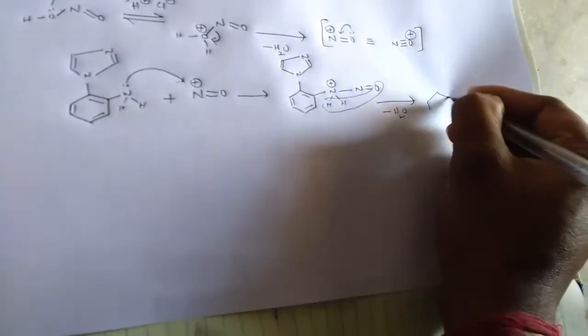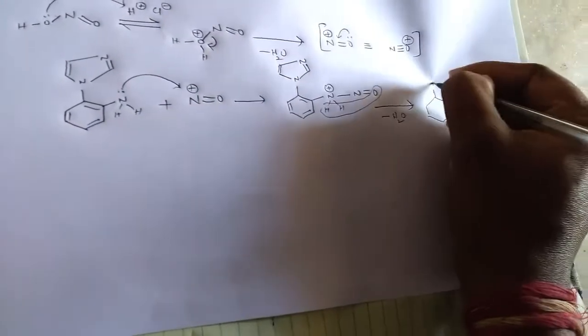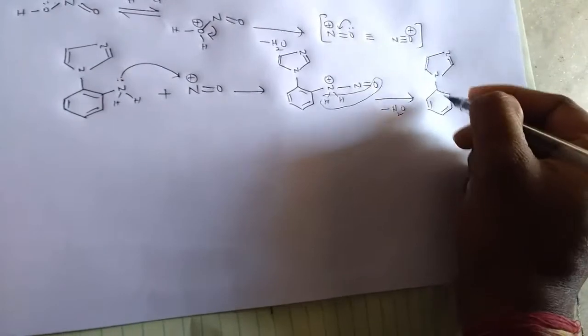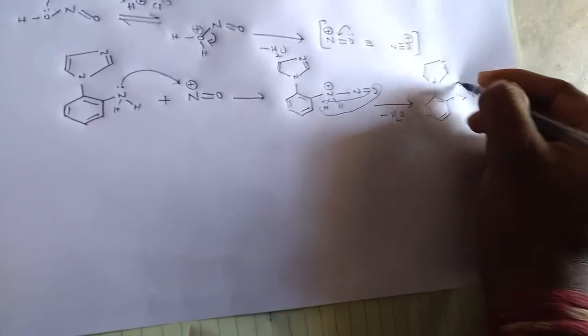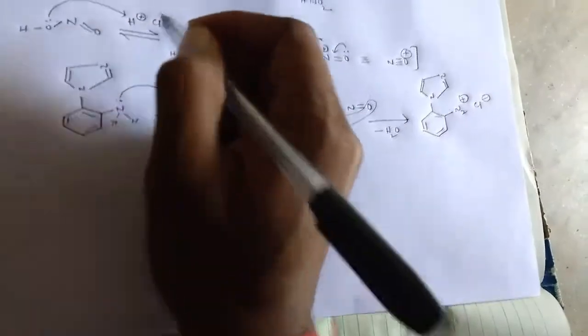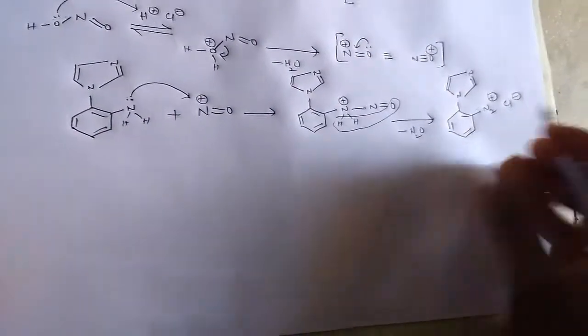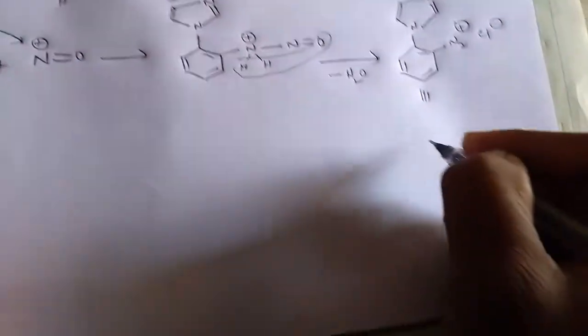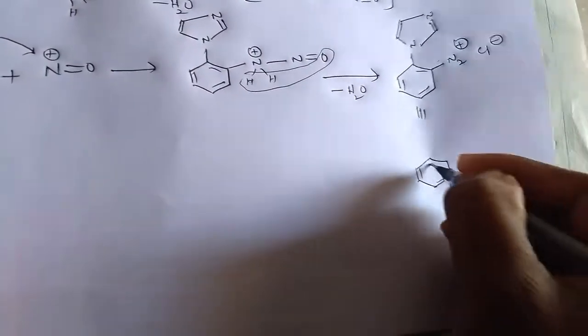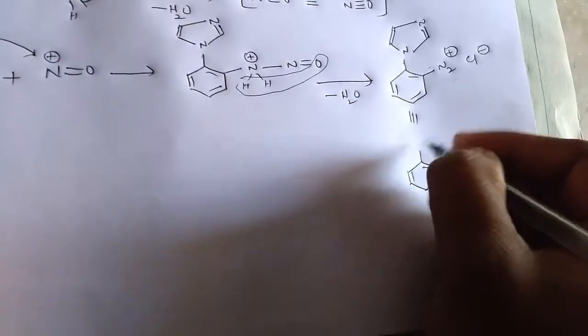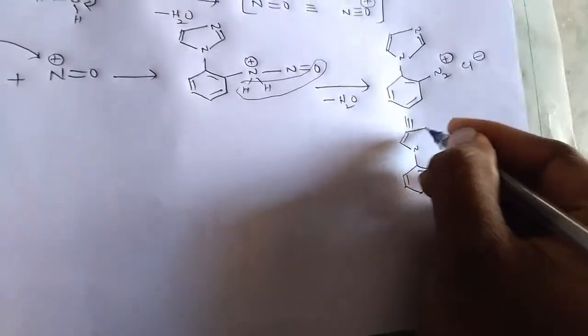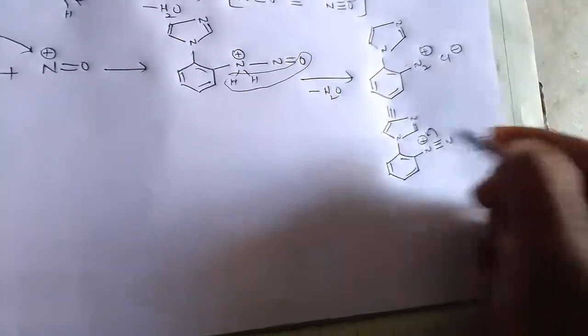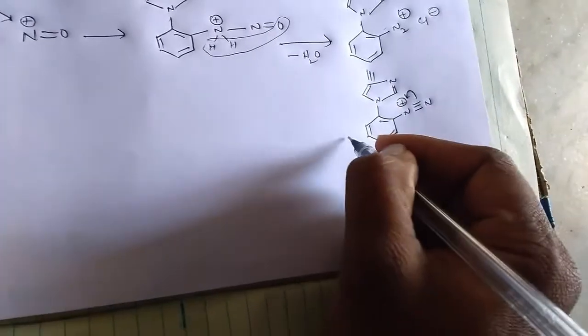Here is the formation of diazonium complex, 2+ with Cl- which is present here. So we can write this like this. By compensating this positive charge from this, we can get N double bond N+ with Cl-.